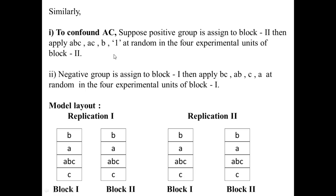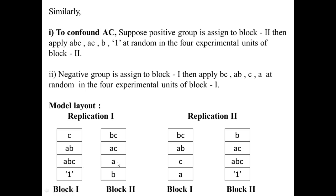If we confound AC in replicate 2, we may assign the negative group to block 1 and the positive group to block 2. Then BC, AB, C, and A are applied at random to block 1. For the model layout: in replicate 1, AB is confounded, the positive group is assigned to block 1 giving C, AB, ABC, and 1, and the negative group to block 2 giving BC, AC, A, and B.